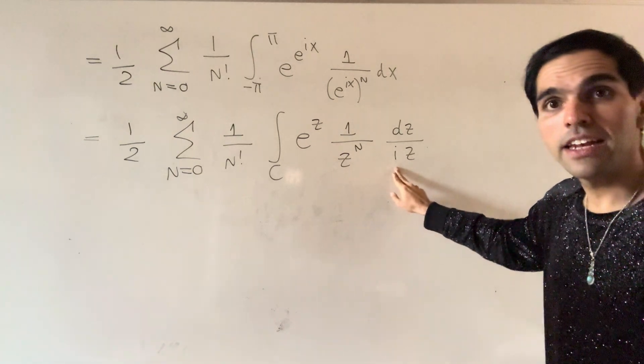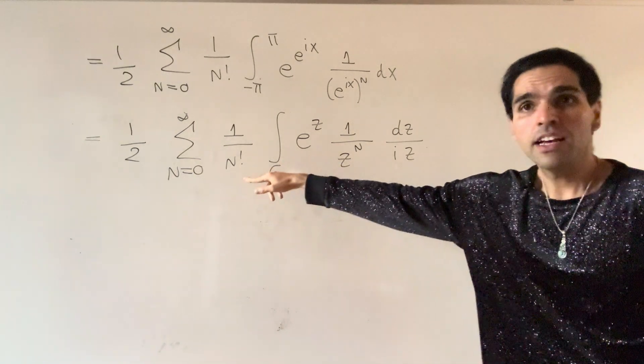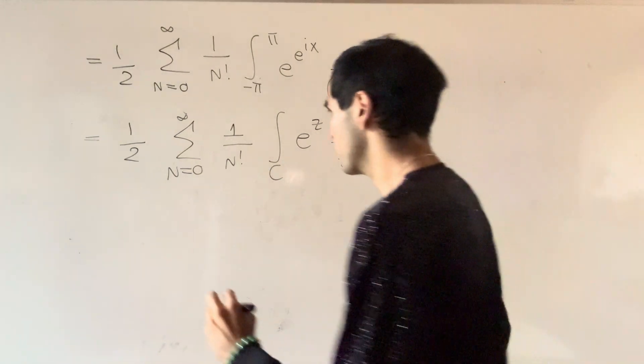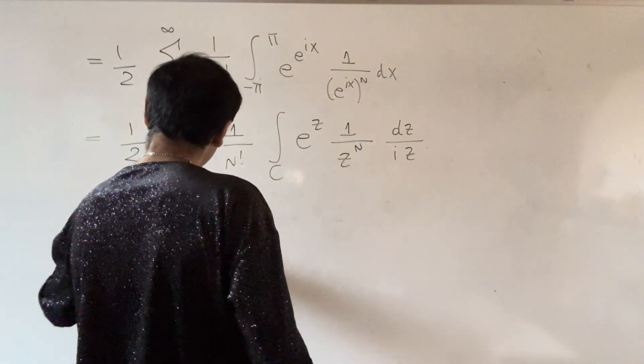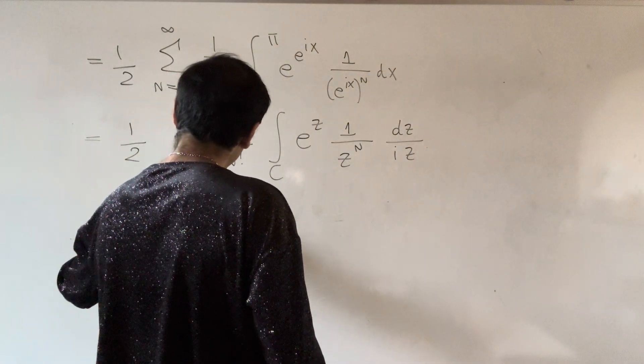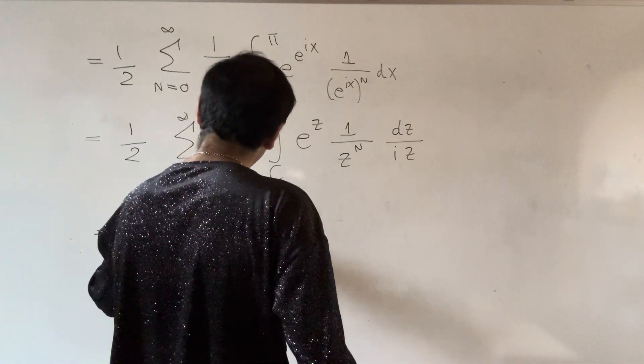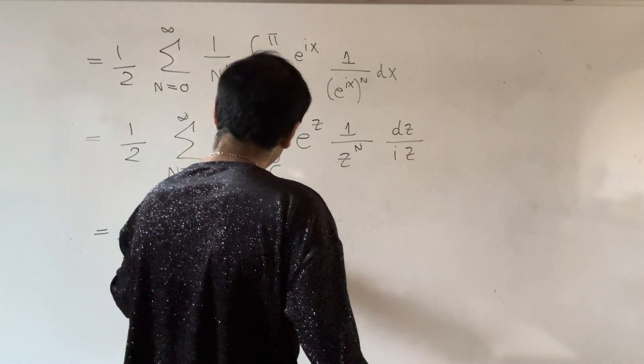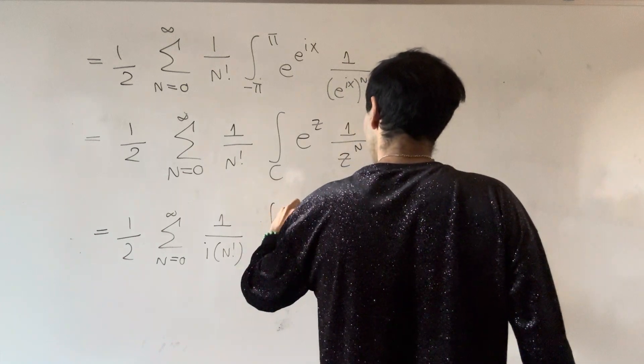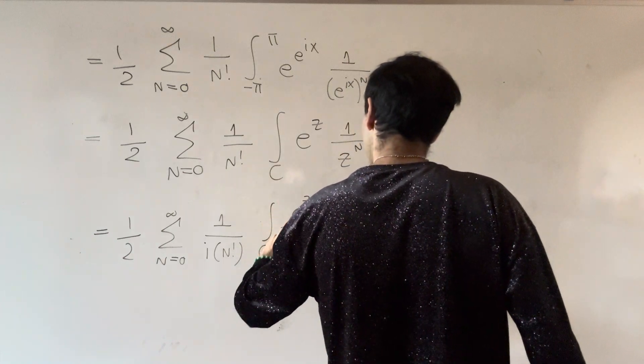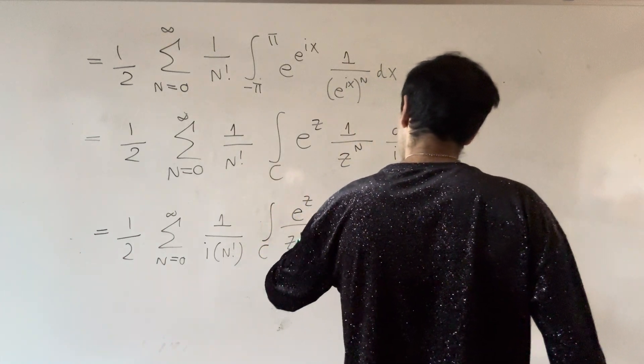Which now we can simplify a little bit, so this i can just come out. So, one half, and then sum from zero to infinity, one over i, n factorial, and then contour integral of e to the z, over z to the n plus one. Easy.